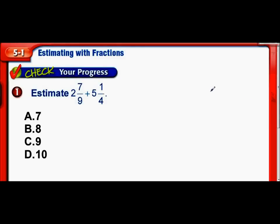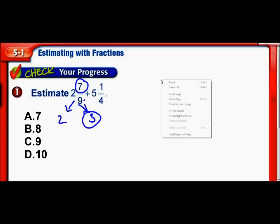So here's our first one. We're going to be estimating 2 and 7 ninths plus 5 and 1 fourth. The deal with mixed numbers is we're going to either round them up or down to the next whole number. So in the case of 2 and 7 ninths, we're either going to round that to 2 or to 3. So what is 2 and 7 ninths closer to? Here's 7 ninths. 7 is definitely more than half of 9. So 7 ninths is more than 1 half.